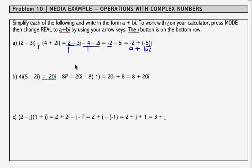To move to the second problem, part b, we're going to multiply 4i times the quantity (5 - 2i). If I distribute, 4i times 5 is 20i. 4i times negative 2i is negative 8i squared.